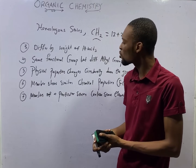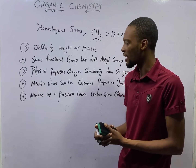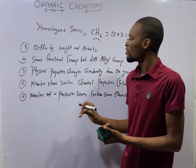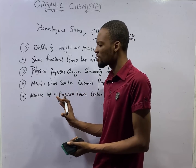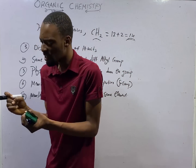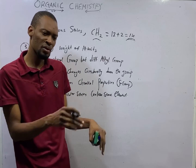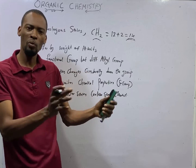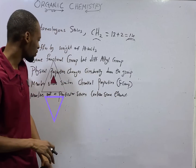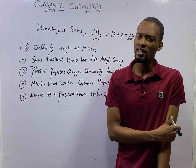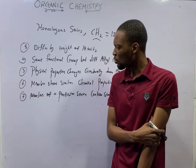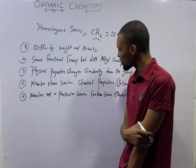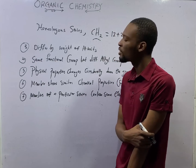Members have the same functional group but different alkyl groups — we shall see this in the next episode. The physical properties of homologous series will begin to change gradually as you go down the series, because as you go down the series you have more and more carbons. Members of a homologous series have the same functional group, so since they have the same functional group, they will show similar chemical properties. We shall see functional groups in the next episode.